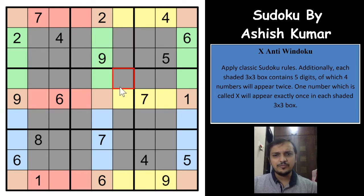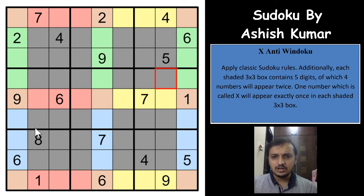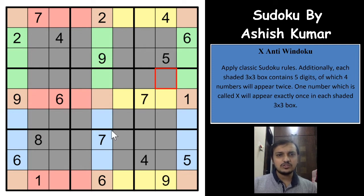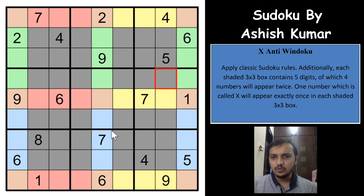Similarly, whatever 4 digits are appearing twice in one Windoku will also appear twice in its diagonal Windoku as well. That is the third trick for this X-Anti Windoku.